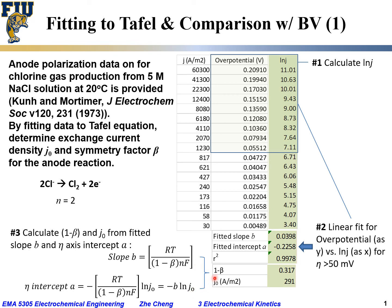And with this, if you plug the number in, we did the calculation 1 minus beta would be 0.317, while the exchange current density, it has current density as a unit of amps per meter square would be 291, which means the exchange current density is 291 amps per square meter. Well, the 1 minus beta, 1 minus symmetry factor would be 0.317.